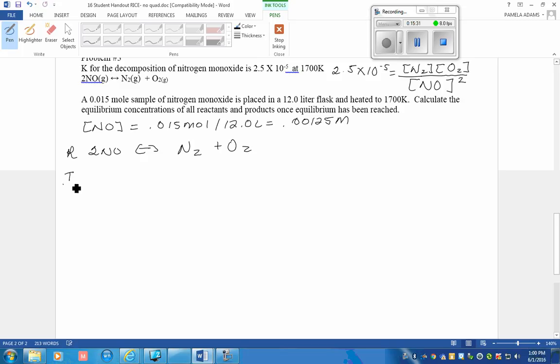So here is our equation for our RICE table. Our initial concentration is 0.00125 molar of NO, no N2, no O2. The change, since this must shift to the right to get to equilibrium, this will get smaller by a value of 2 times as fast as this gets larger. I took the coefficient and put it in front of the X to keep us straight with our stoichiometry for this problem.